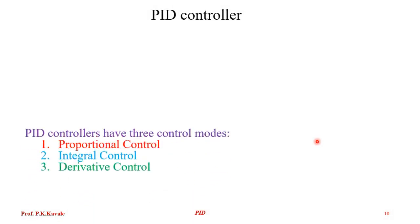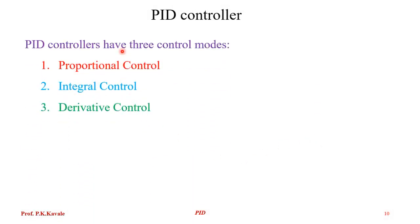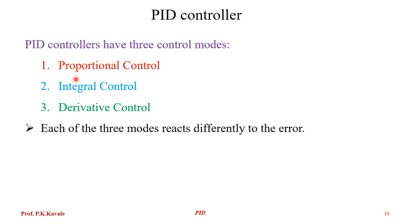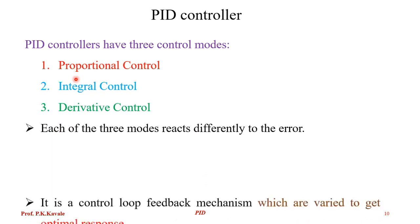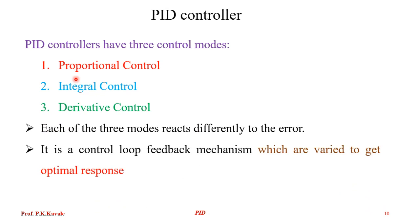A PID controller has three controller modes: proportional, integral, and derivative. These three controllers take the system to the desired value as soon as possible — their job is to take the system to the desired value. It is assumed you know the relevant mathematical terms. Each of the three modes reacts differently to the error; it is a control loop feedback mechanism varied to get the optimal response.